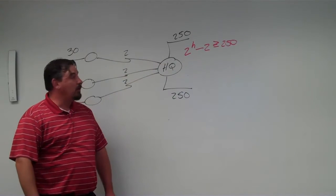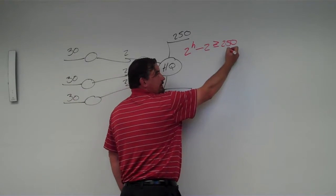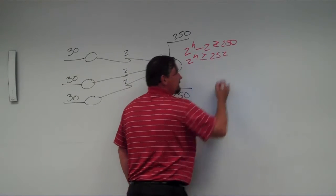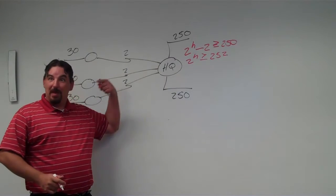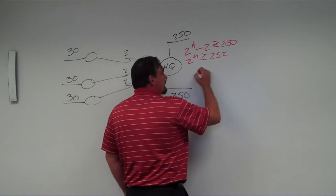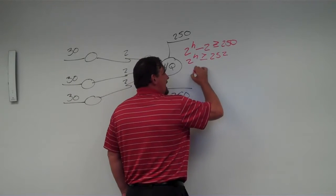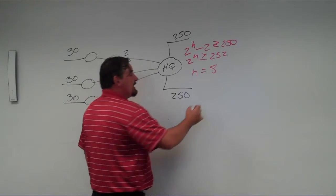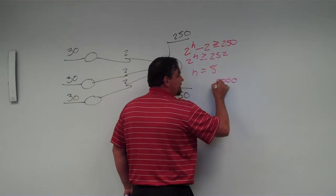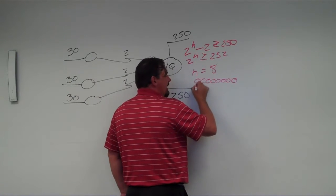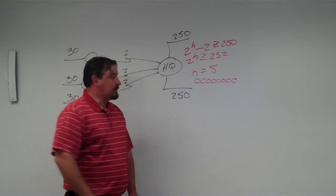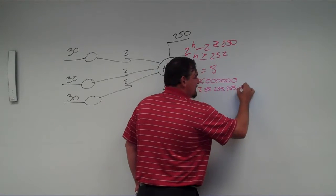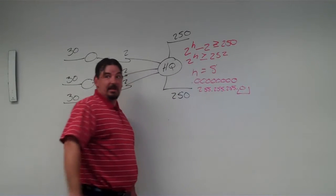So 2 to the H has to be greater than or equal to 252. Since 2 to the 8th power is 256, H has to be at least 8 host bits — that's one full octet. So our subnet mask in this case is going to be 255.255.255.0, with 8 host bits on the end.